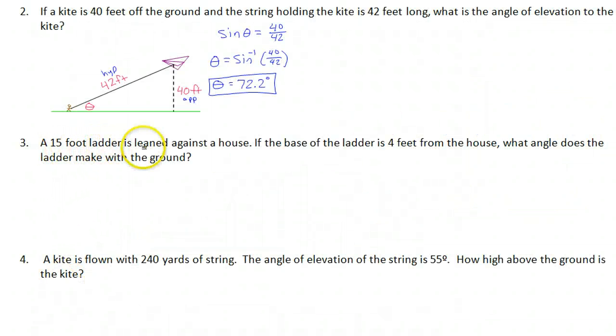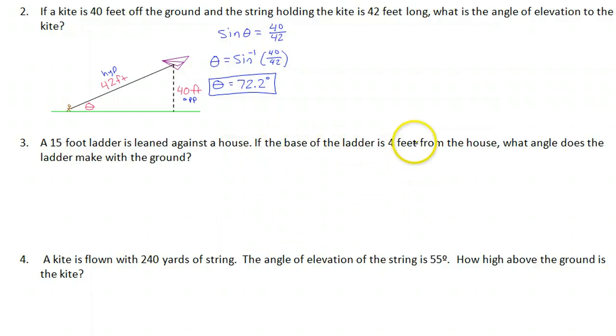Number three: a 15-foot ladder is leaned against a house. If the base of the ladder is four feet from the house, what angle does the ladder make with the ground?